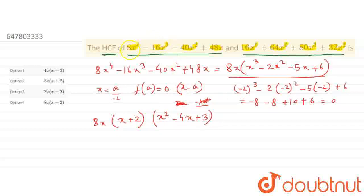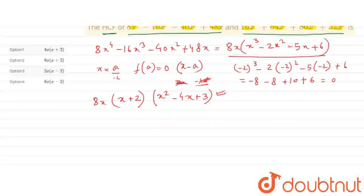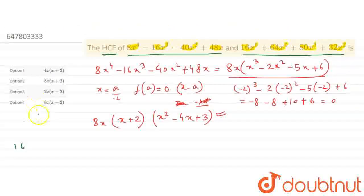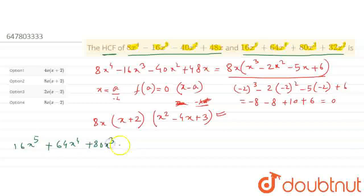So the first expression 8x to the power 4 minus 16x cubed minus 4x plus 4 is now factorized. This factorization is done. Similarly, we have to do the other equation: 16x to the power 5 plus 64x to the power 4 plus 80x cubed plus 32x squared.